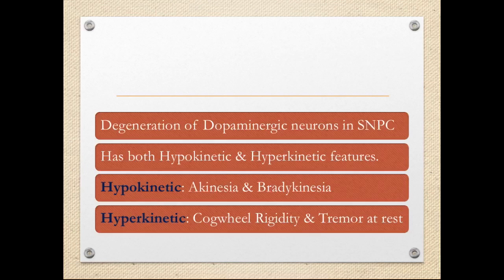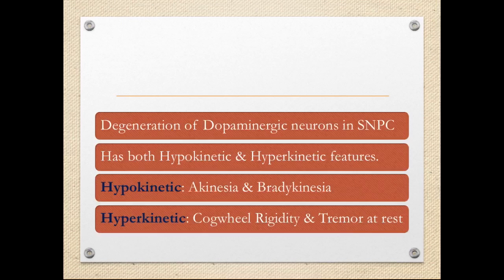The hypokinetic features of Parkinson's disease are akinesia and bradykinesia. The hyperkinetic features are rigidity and tremor. Specifically, the tremor will be a resting tremor, and the rigidity will be cogwheel rigidity — both of which will be covered in detail.